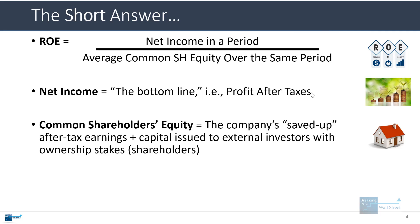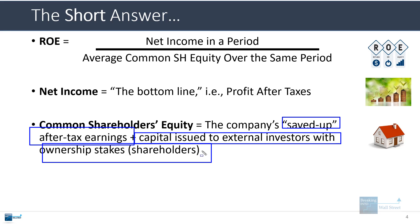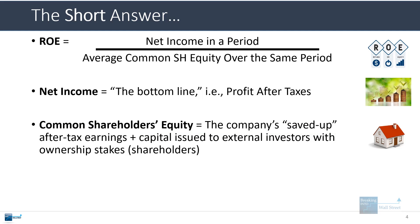If you take all the company's net income over the long haul, you deduct the dividends that they've issued and distributed — because those are no longer saved up — and then you also add in the value of the stock they issued to investors at the time they issued it. If you add all these up over time, that will tell you what the common shareholders' equity is.